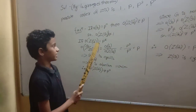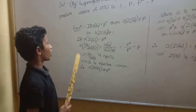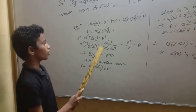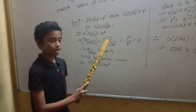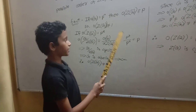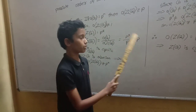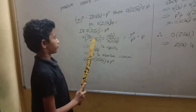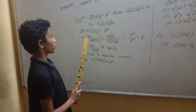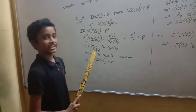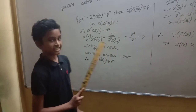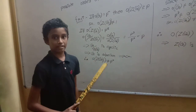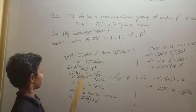If the order of Z of G is equal to P square, then the order of G mod Z of G is equal to the order of G divided by the order of Z of G, which is P cube divided by P square, which equals P. So, if the order of G mod Z of G is P, then G mod Z of G is cyclic, which implies G is abelian — a contradiction to the hypothesis.